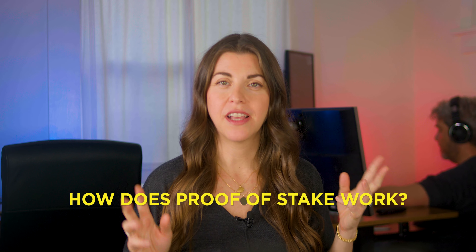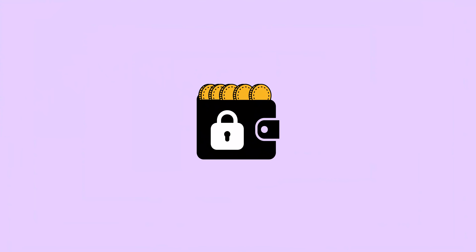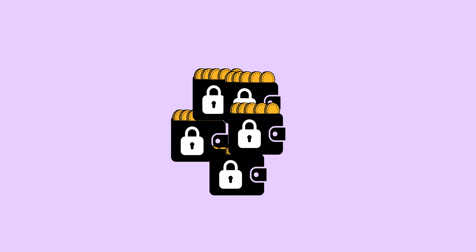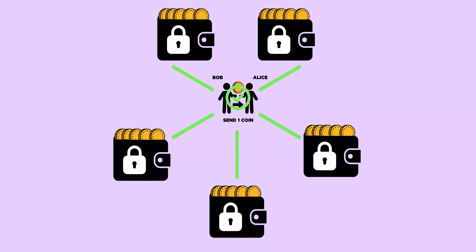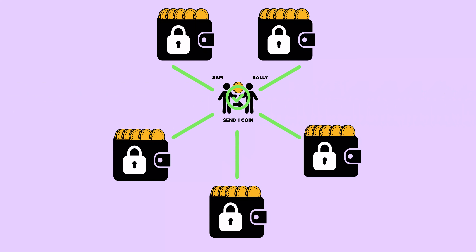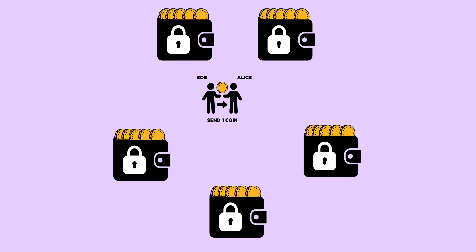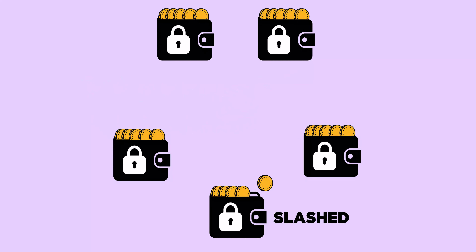Some proof of stake networks have variations on some details, but in general this is how it works. Proof of stake users lock up or stake an amount of coins in their wallet as collateral to ensure they behave honestly and validate transactions correctly. These users are called stakers, and they serve the same purpose that miners do in a proof of work network — validating transactions and creating new blocks. If a staker behaves dishonestly and validates bad transactions not in consensus with the rest of the network, that user will have some of their stake slashed — that is, confiscated.